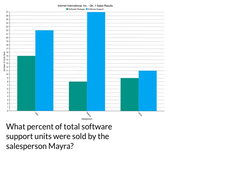The first thing I want to point out is we have a chart here which we're gathering data from. When you're interpreting and evaluating the information on a chart, the very first thing you want to do is identify the name of the chart — what is this chart actually telling you? This one is Internet International Incorporated quarter one sales results, so you know this chart is talking about sales results.